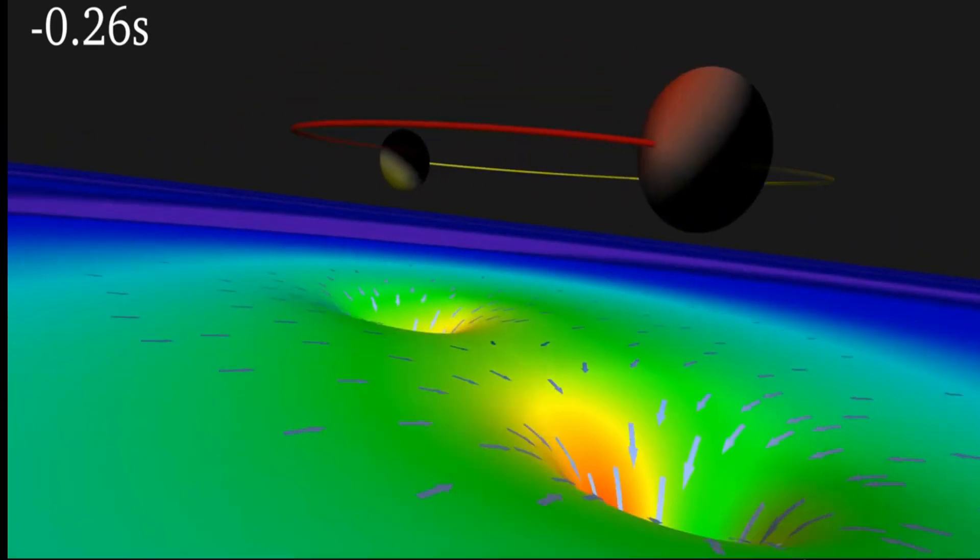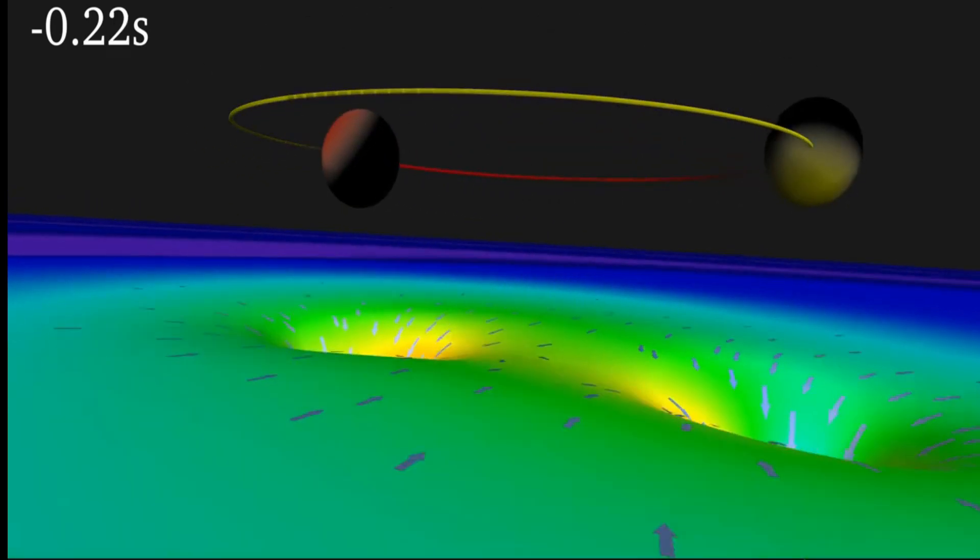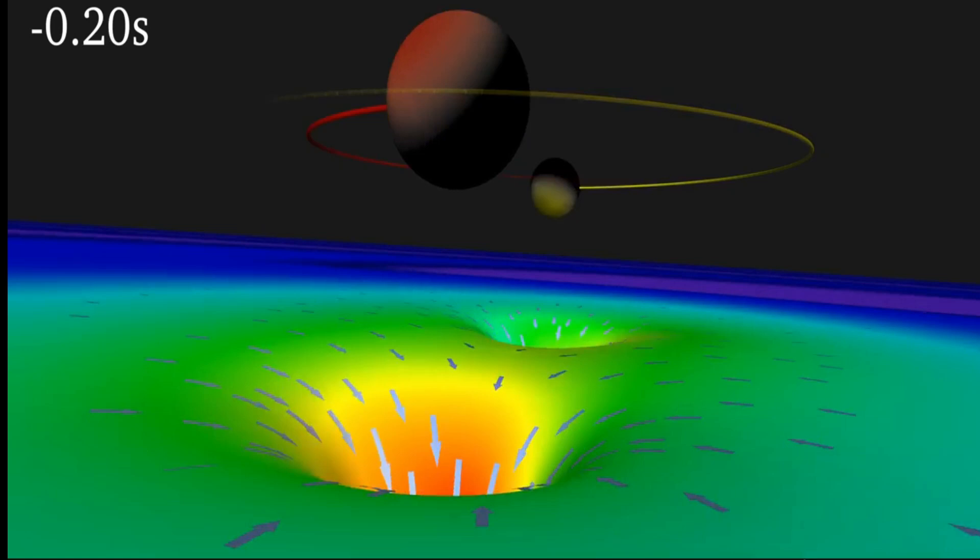Far from the holes, the blue and purple bands depict outgoing gravitational waves produced by the black hole's orbital movement and collision.